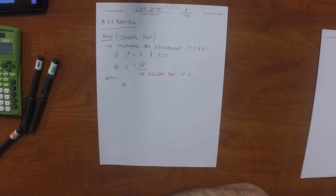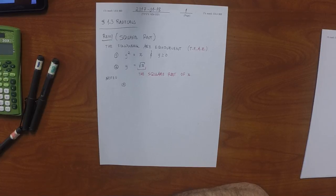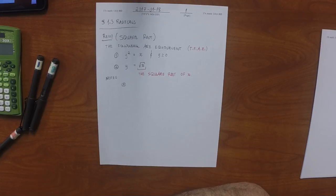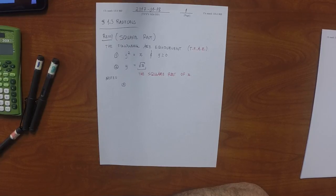So what must be true about the sign of X? It's positive — well, almost. X has to be greater than or equal to zero, which is to say non-negative. What is the distinction between positive and non-negative? It can also be zero. Positive means greater than zero; non-negative means greater than or equal to zero.